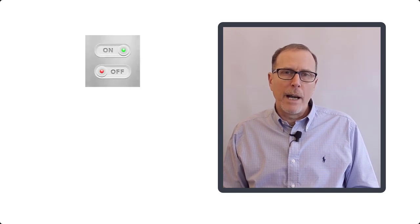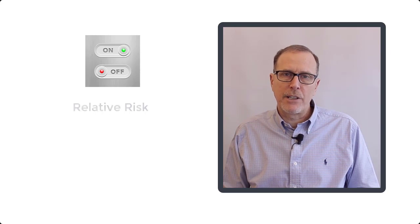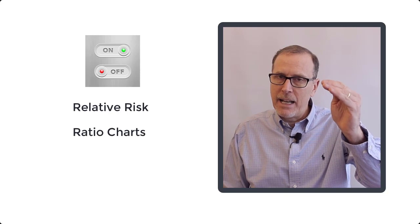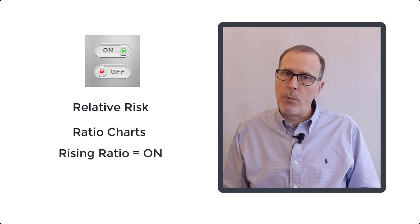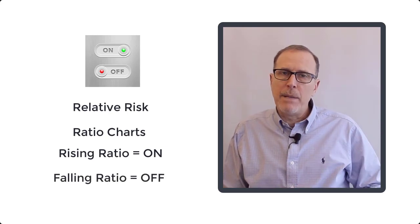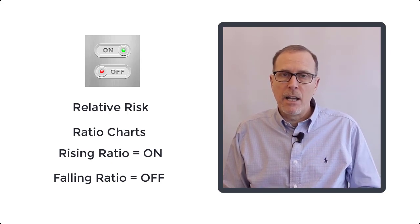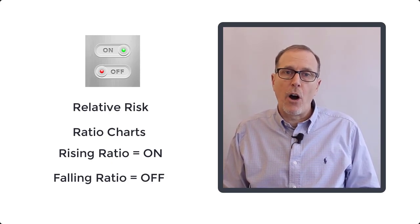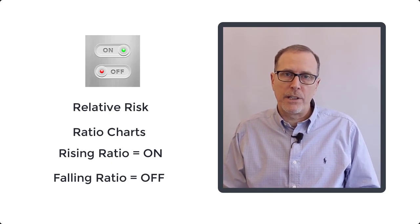Today we're going to look at some ratio charts. We want to know how we can measure risk on and how we can measure risk off. Basically we're looking at two different assets — your riskier asset and your low risk asset or relative safe haven. When that ratio is rising, the market is in a risk on mode, which is positive for stocks. When that ratio is falling, the market is in a risk off mode or risk aversion, and that is potentially negative for stocks.